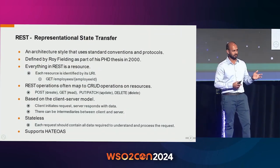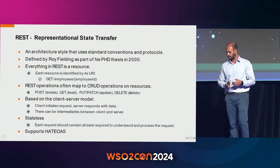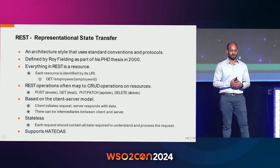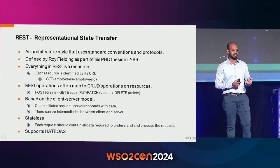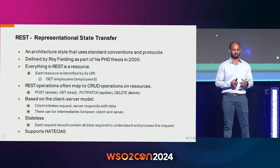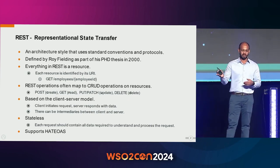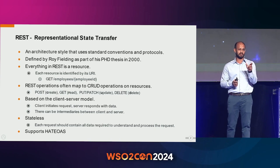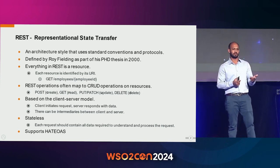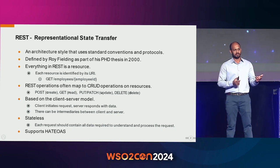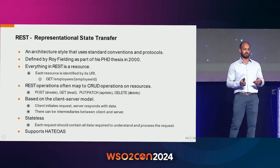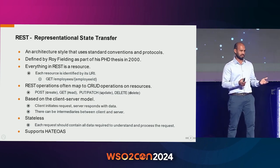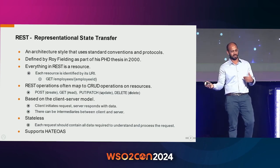We start with REST — the simplest form of API available for web service interaction, introduced by Roy Fielding in 2000. Everything in REST is a resource. For example, GET on /employee/{employeeID} — the path represents the uniform resource identifier of that employee resource, and GET denotes the action. REST maps to standard HTTP verbs like PUT, GET, POST, and so on. Each HTTP verb matches to an action. It's a request-response model: the client makes a request, the server responds with the data.